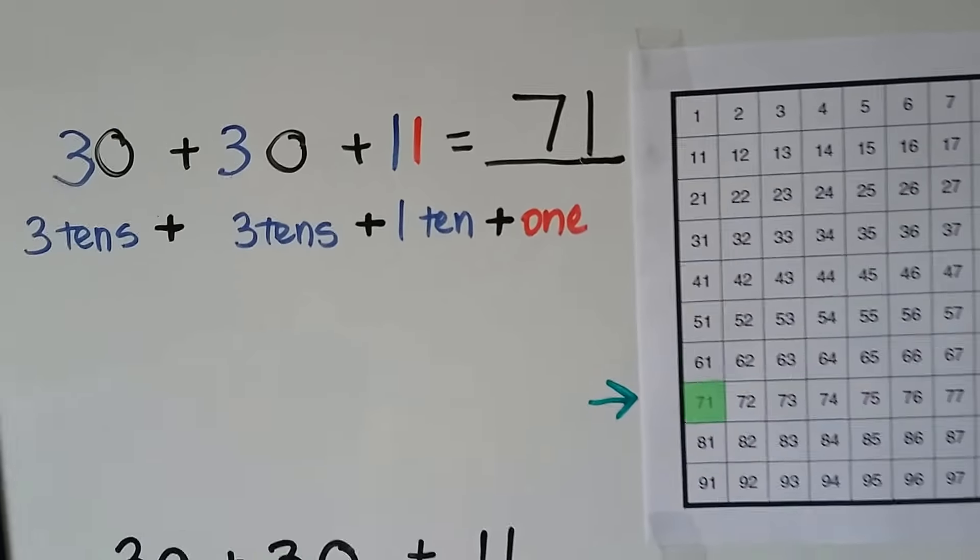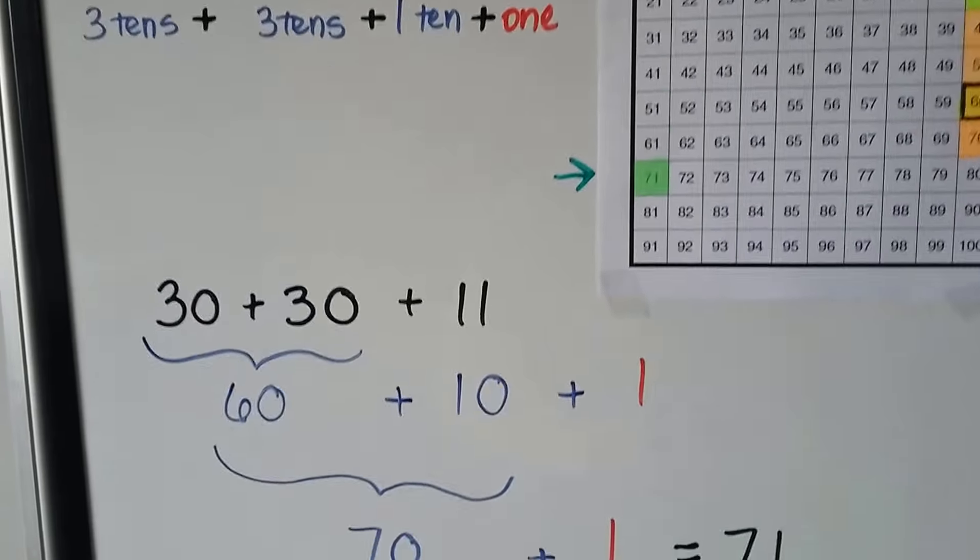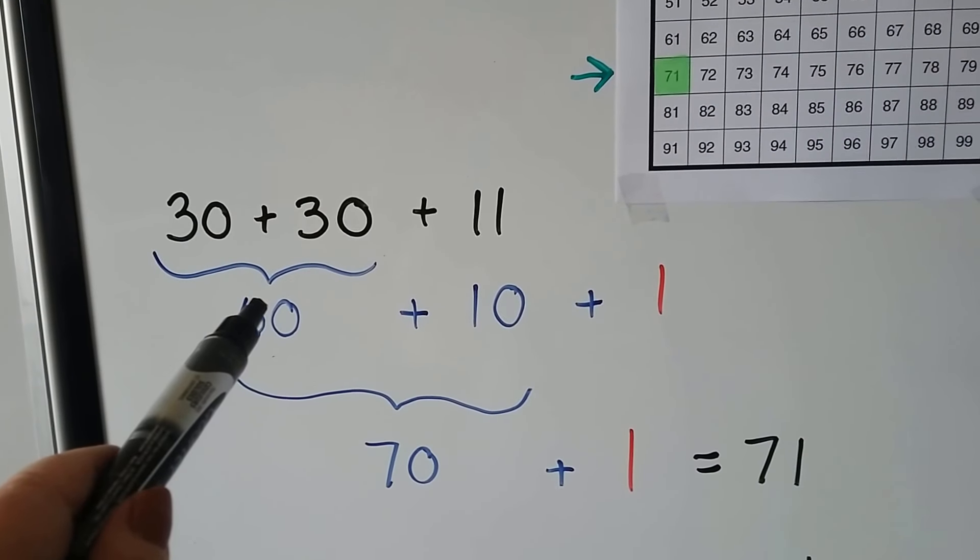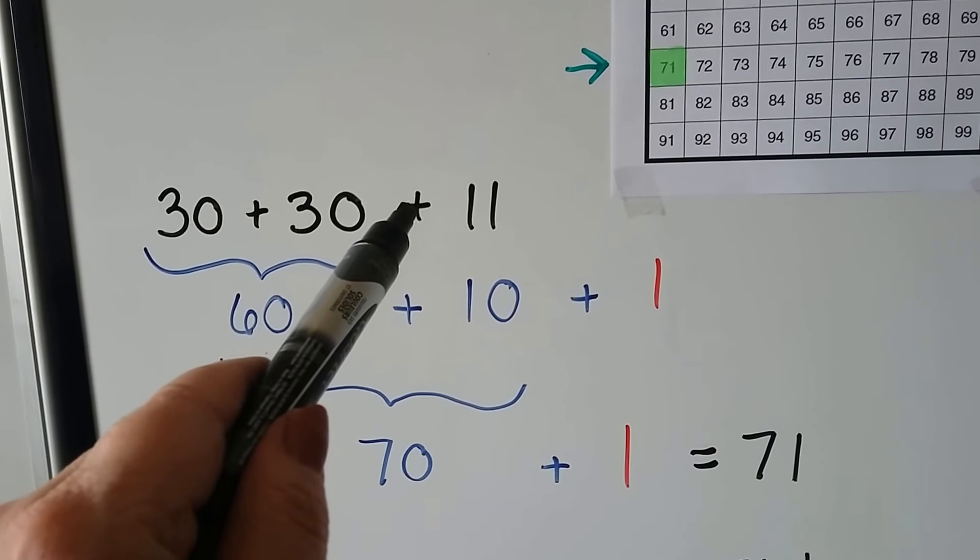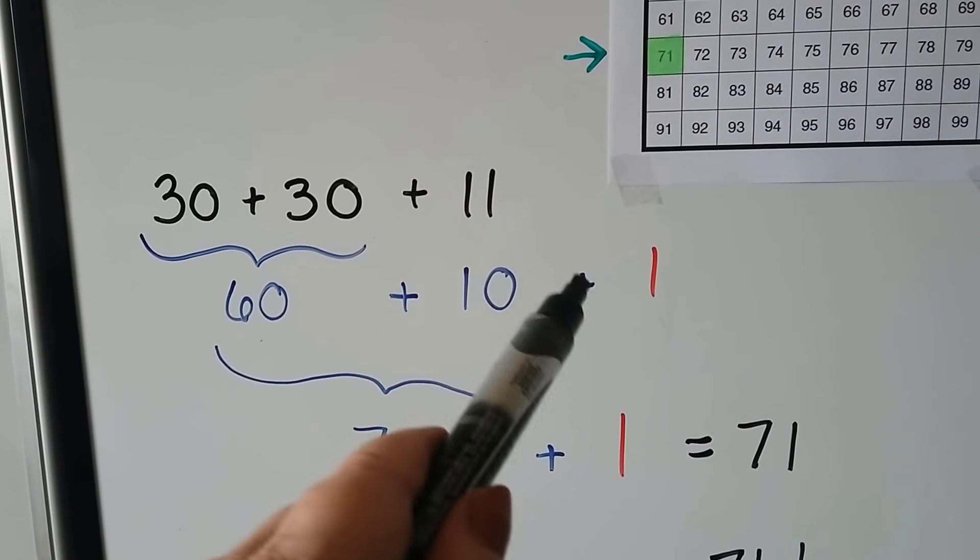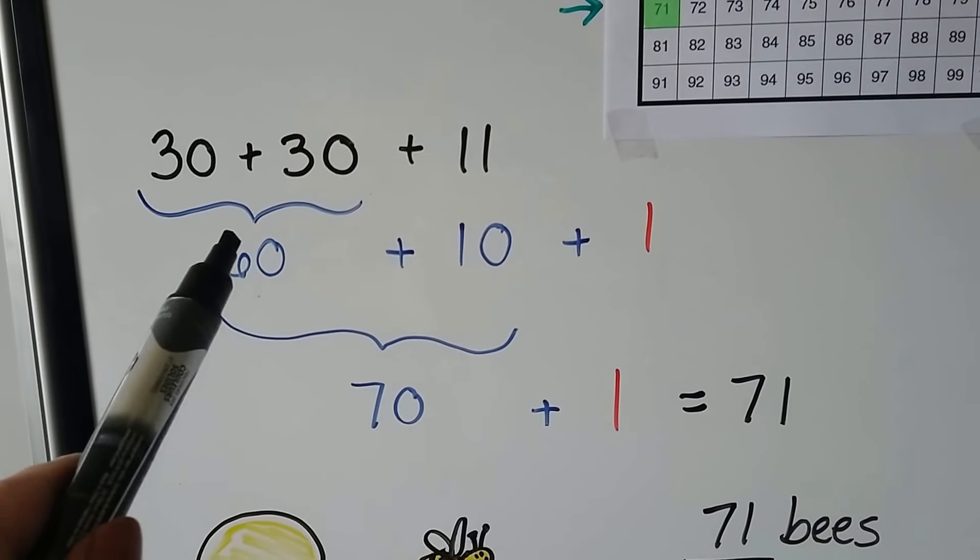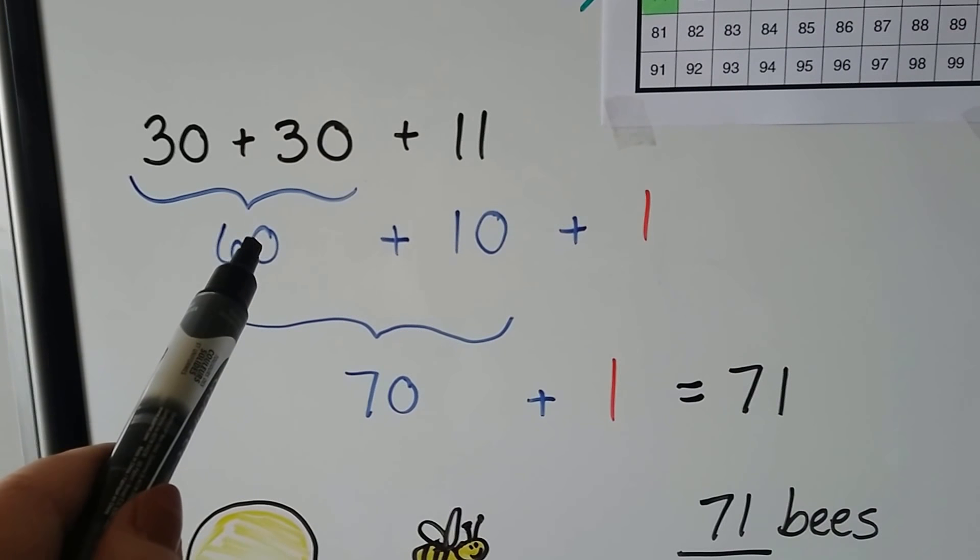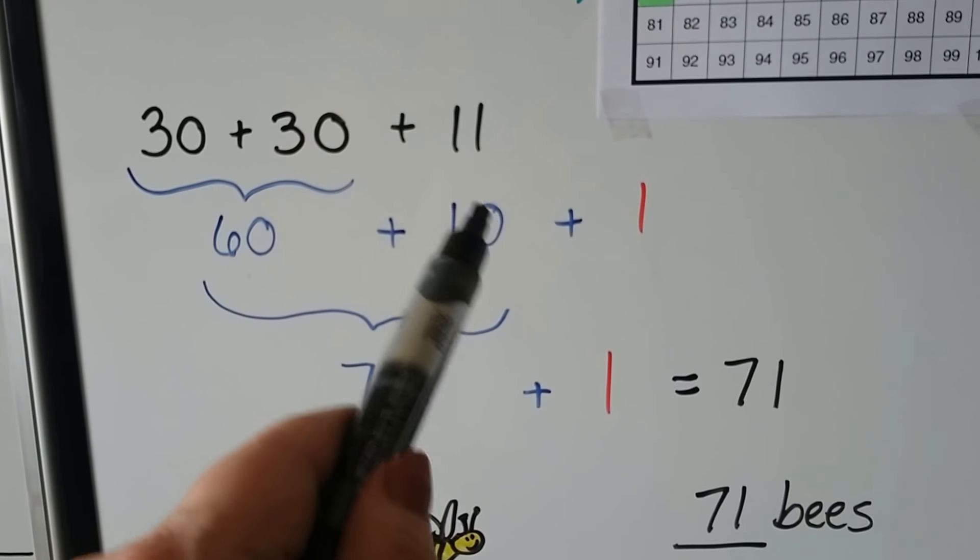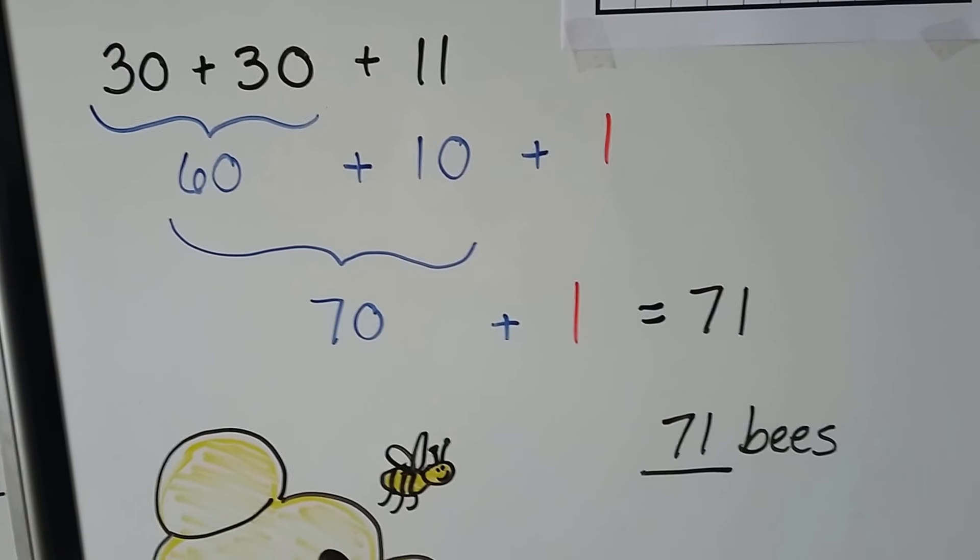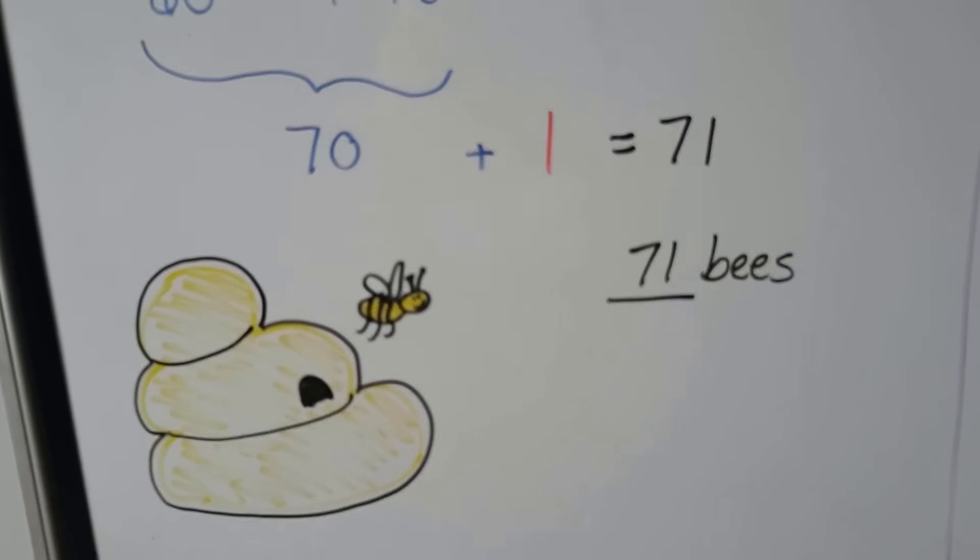The next row of 71. 30 plus 30 plus 11 is equal to 71. We could say 30 plus 30 is equal to 60 plus the 11 is a 10 plus 1, isn't it? If we broke the 11 apart, we could add the 60 plus the 10 from that 11 and get a 70. And then we could add a 1 and get 71. There would be 71 bees.